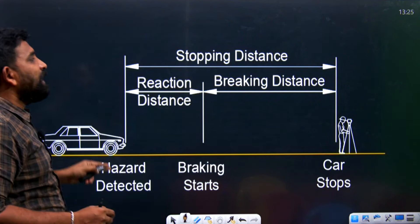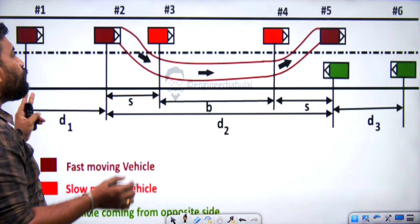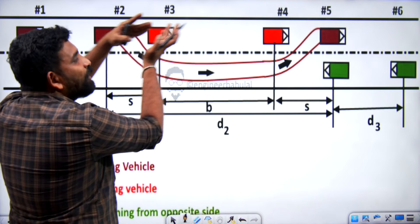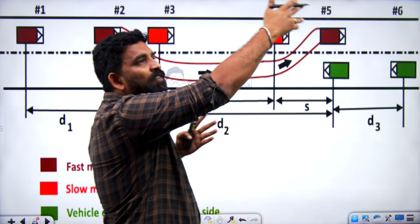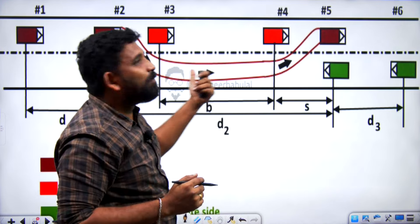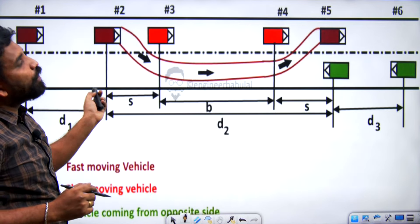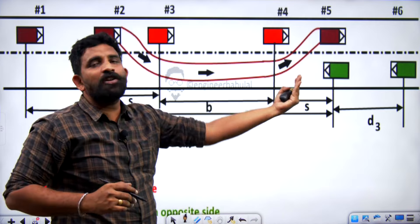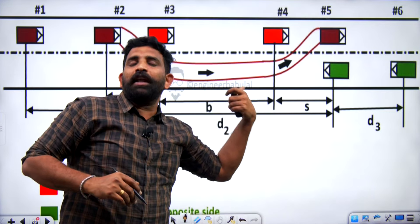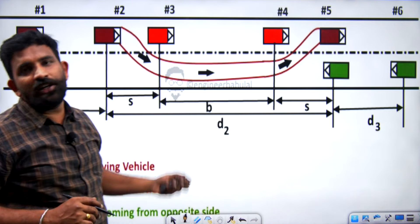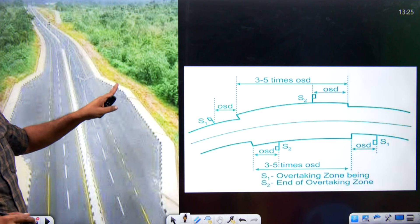We need to cover stopping sight distance - including lag distance, reaction distance, and braking distance - all from a practical point of view with values. Other than stopping sight distance, we need to do the overtaking sight distance. In overtaking sight distance, we need to consider a vehicle performing an overtake and the distance involved.